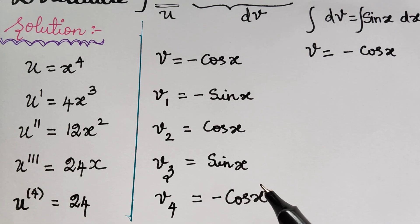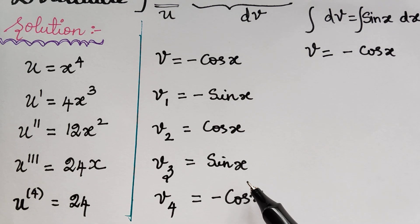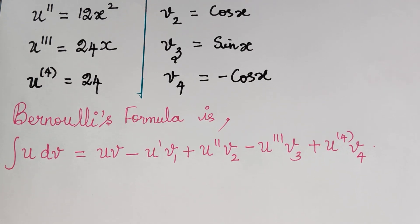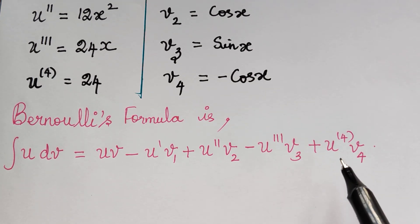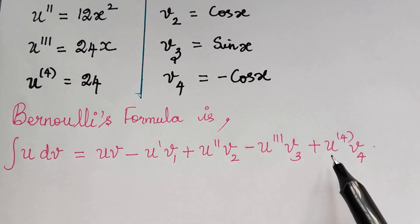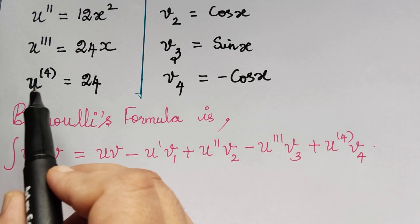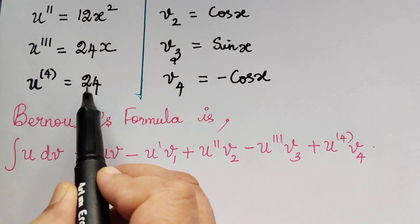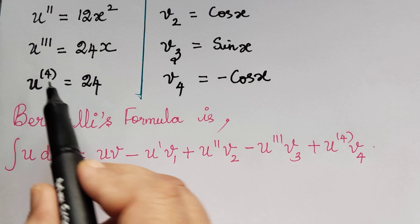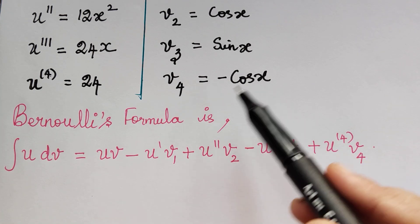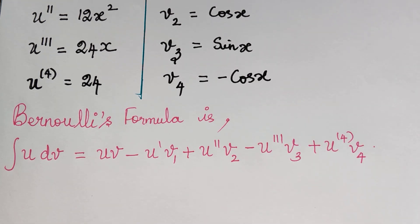Now we substitute each of these values in Bernoulli's formula. The formula is written here and stopped at v4, because after u'''' the terms become zero since the differentiation of a constant is 0. Now we substitute each value we have obtained into this formula.